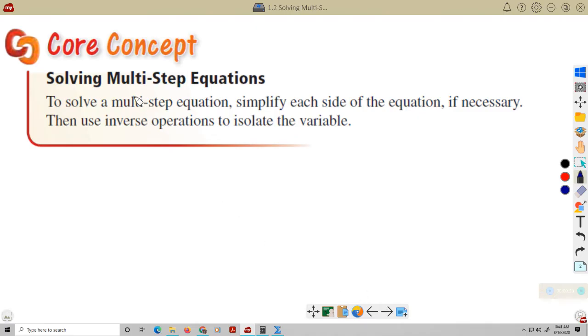Okay, so to solve a multi-step equation, simplify each side of the equation, if necessary, then use inverse operations to isolate the variable. So, what does this say? The second sentence is what we did in the first lesson. The second sentence is using these inverse operations to isolate the variable. That's the solving part of it.